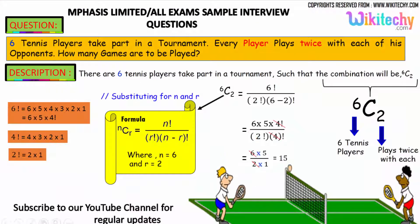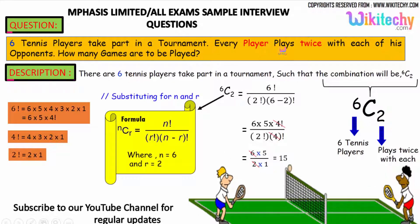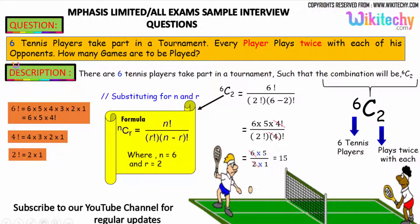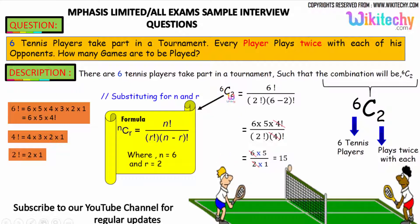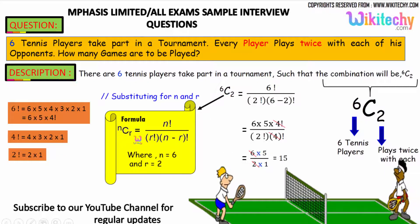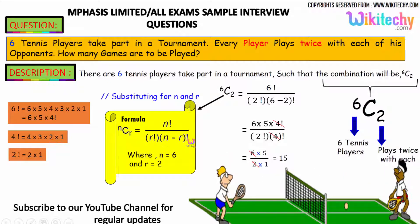Six tennis players are there and they are going to participate, and they have to play twice with each of his opponents. So, it is a combination 6C2. The formula NCR is equal to N factorial divided by R factorial into N minus R factorial.